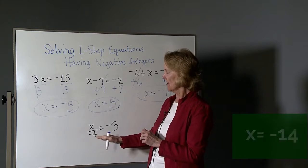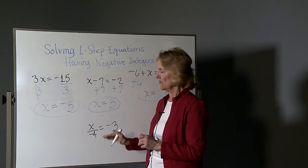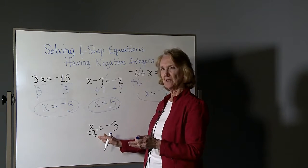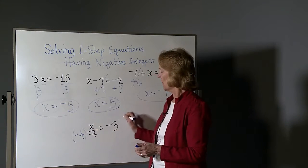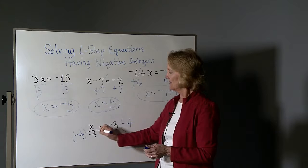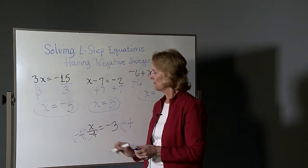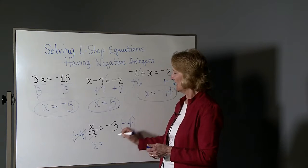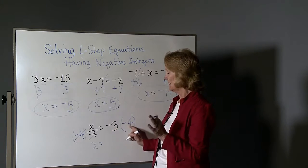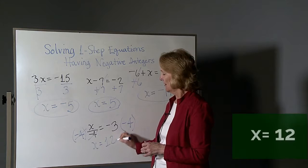Last one is down here. X divided by negative four equals negative three. Opposite of dividing by negative four is multiplied by negative four. This one in the denominator cancels that one in the numerator. You get x equals negative times negative is positive. Three times four is twelve. Done.